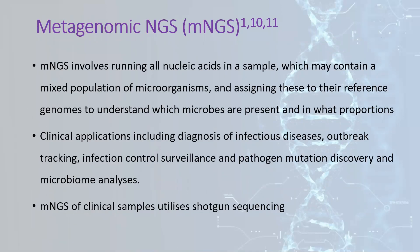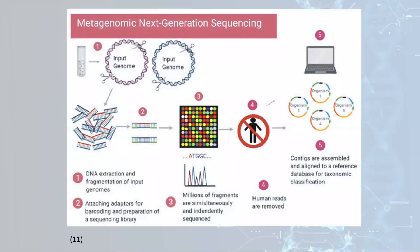Metagenomic NGS involves running all nucleic acids in a sample, which may contain a mixed population of microorganisms, and assigning these to their reference genomes to understand which microbes are present and in what proportions. Clinical applications include diagnosis of infectious disease, outbreak tracking, infection control surveillance, and pathogen mutation discovery and microbiome analysis. For clinical samples, MNGS uses shotgun sequencing.